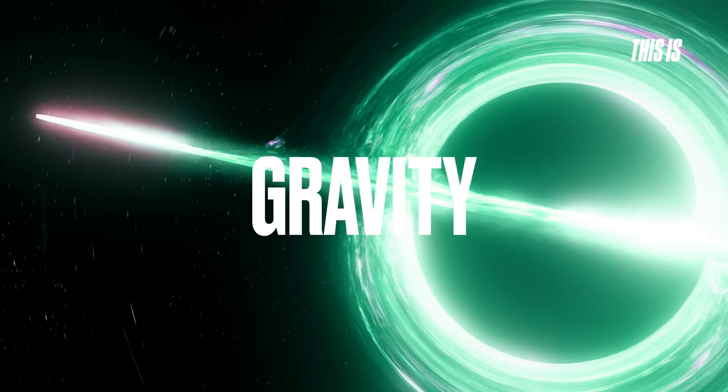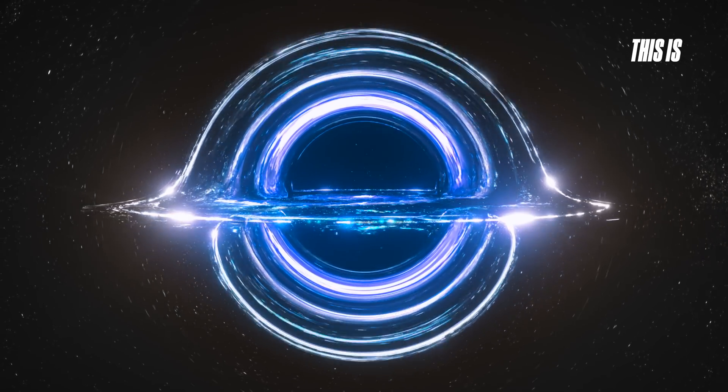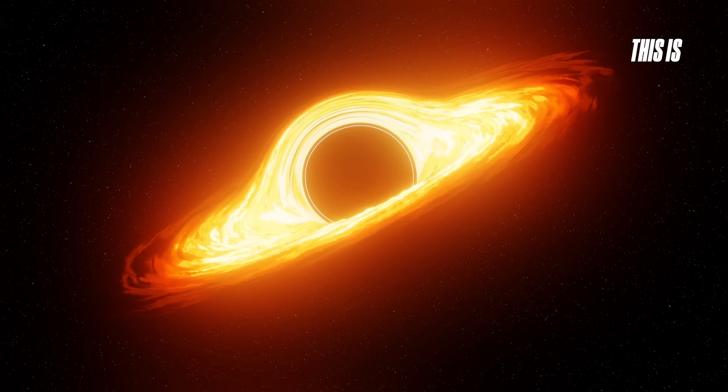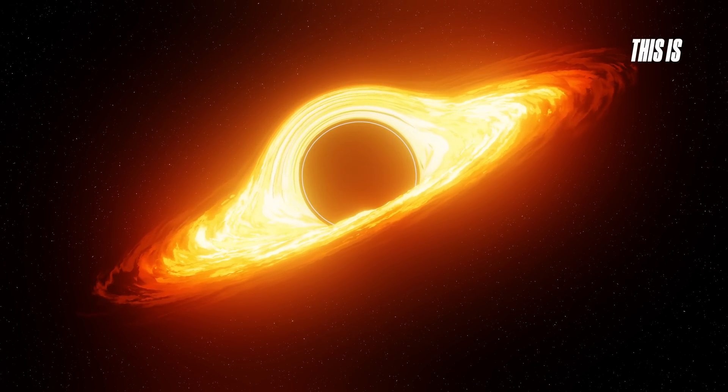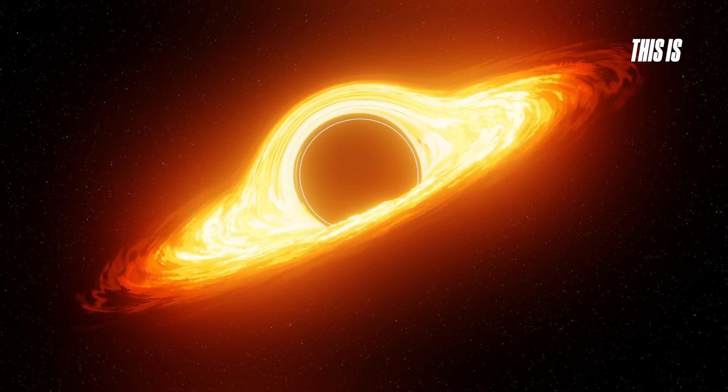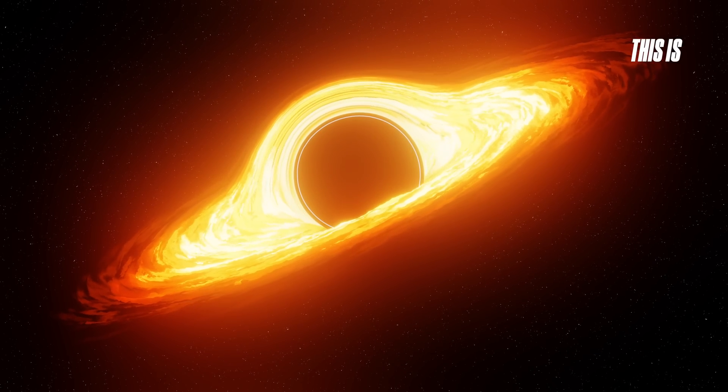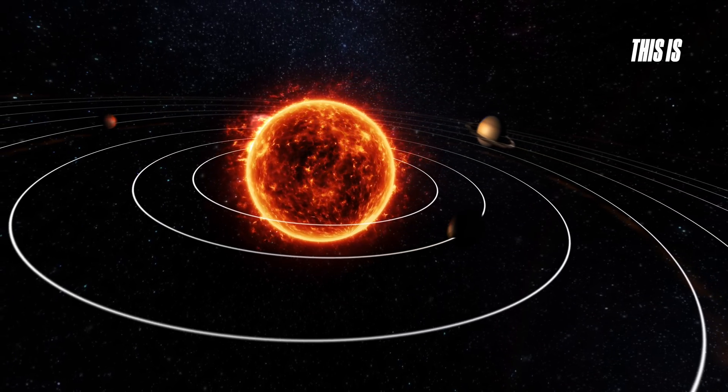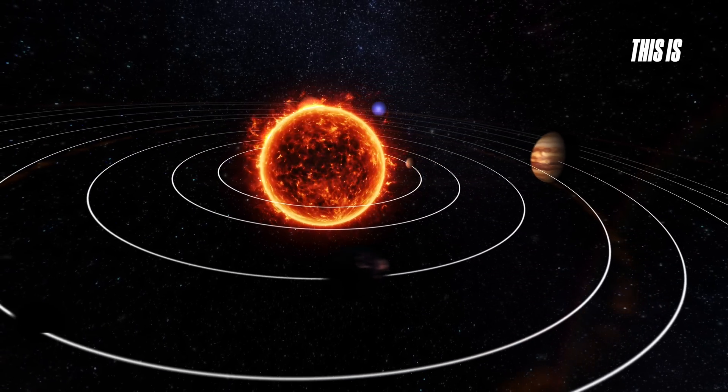It might sometimes seem that multiple accretion disks exist, but gravity tends to organize matter into a single flat disk. The universe is not entirely chaotic; gravity constantly works to arrange matter into stable structures. Any rotating matter naturally flattens into a single dominant disk around a black hole, just as the planets in our solar system are mostly aligned in a single plane due to angular momentum.